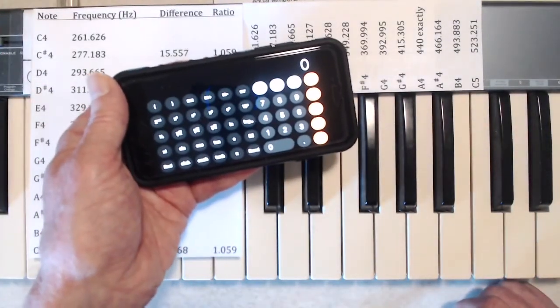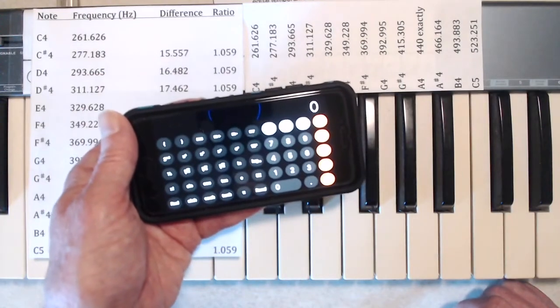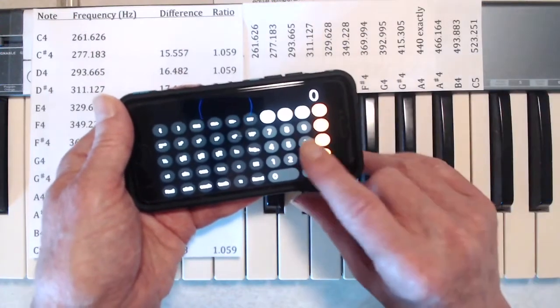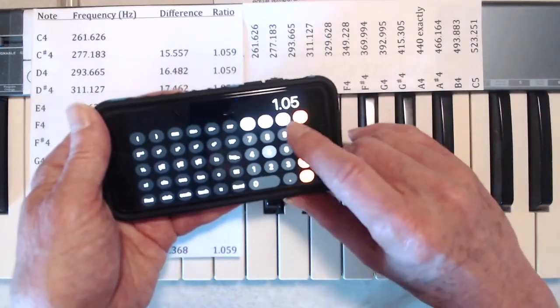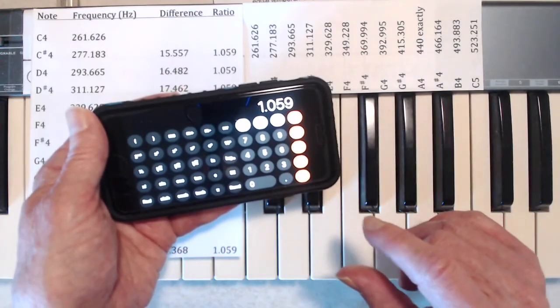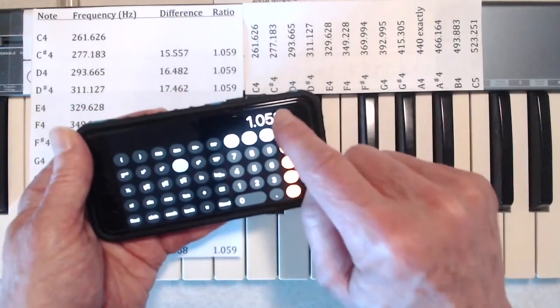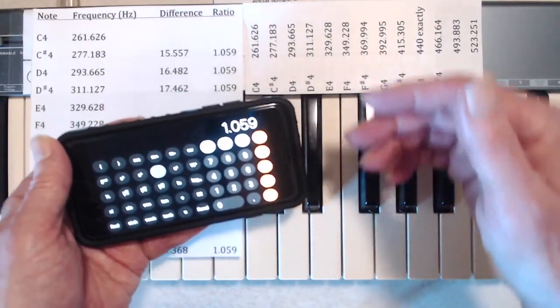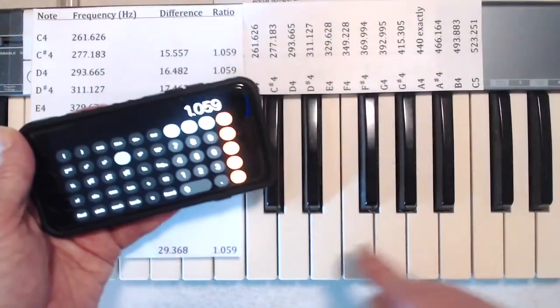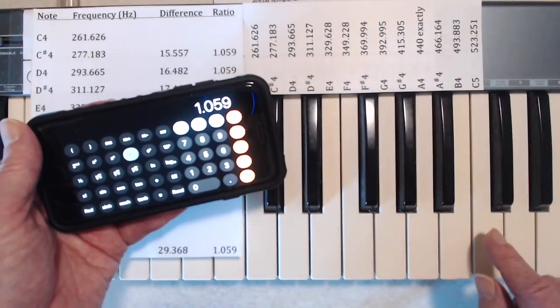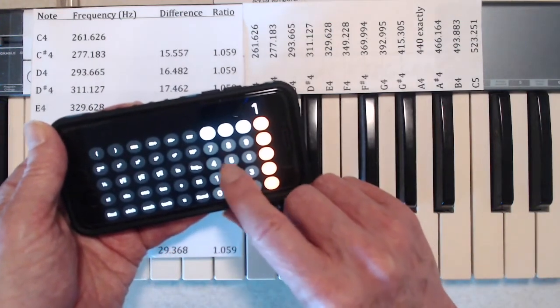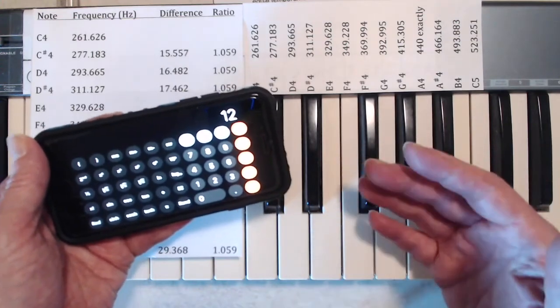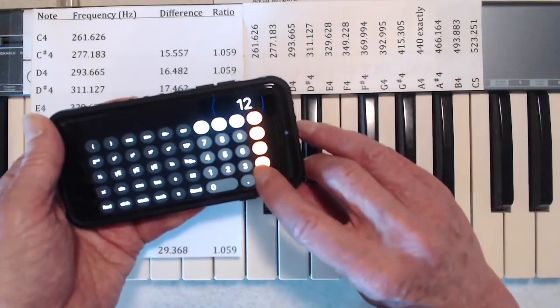Okay, so here's my calculator. And the first thing I'm going to do is type in this number here, the frequency ratio between adjacent notes. And that's going to be 1.059. And now I'm going to hit this button here, which will raise that number to a power. And the power I want to raise it to is 12 because there's 12 notes in the scale from C4 to C5. So now I'll put in 12.